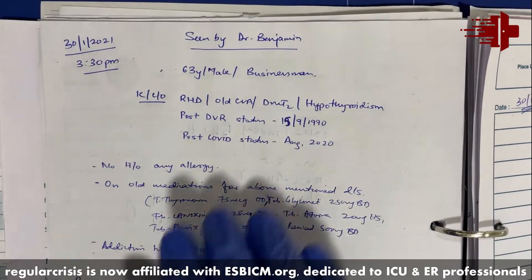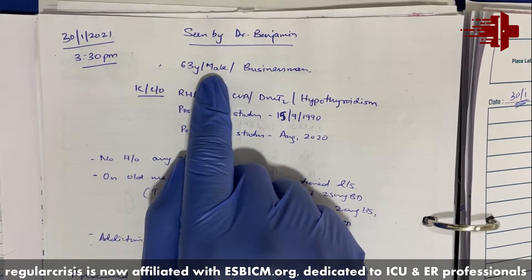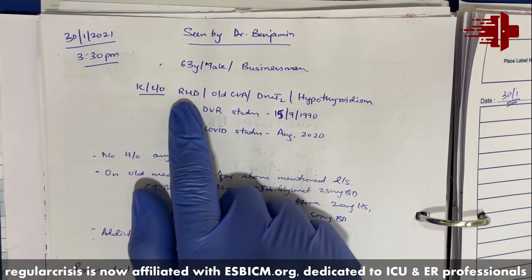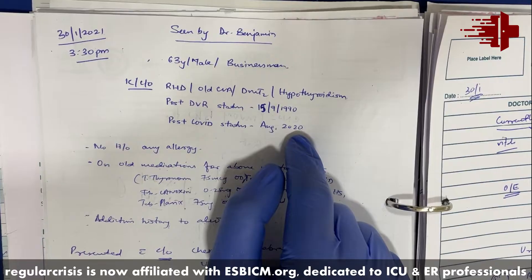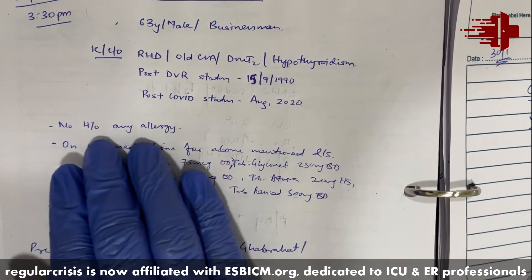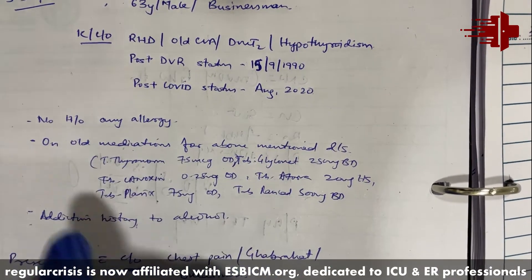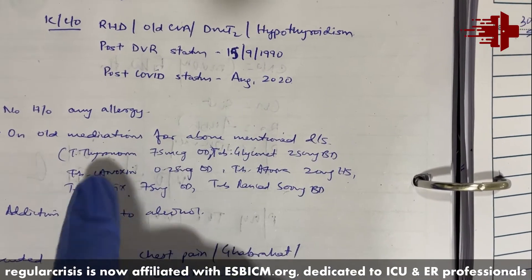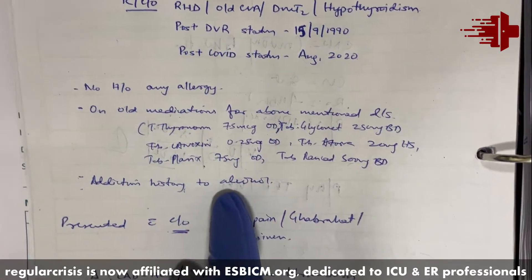This is the first file. The first point is identification: 63-year male, occupation — business. The second point is previous comorbid conditions: rheumatic heart disease, old CVA, diabetes, hypothyroidism, post-DVR status, and post-COVID status August 2020. Third point — history of any allergies: no drug allergy. Previous medications are mentioned here — thyronorm and all other previous medications. There is also a history of ethanol addiction.